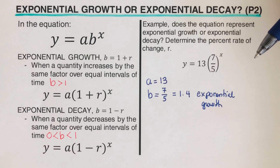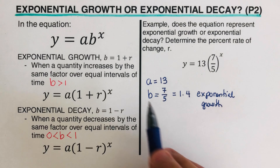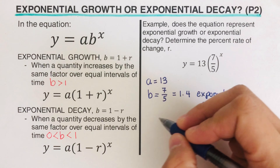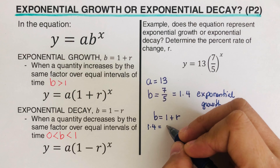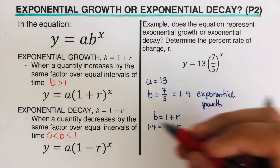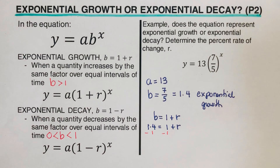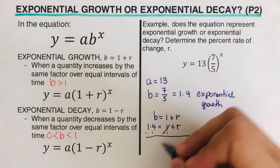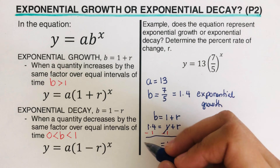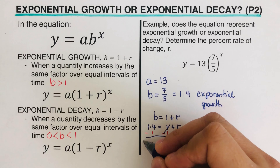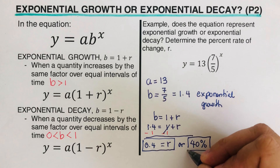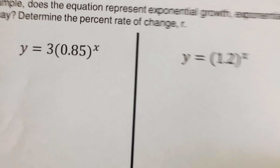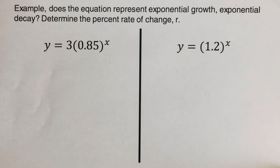We are asked for the percent rate of change — in this case the growth rate. To find the growth rate, we use b = 1 + r. Our b is 1.4, so 1.4 = 1 + r. Subtracting 1 from both sides gives r = 0.4, or 40%. So the growth rate is 40%. I encourage you to pause the video and try the next problem on your own.